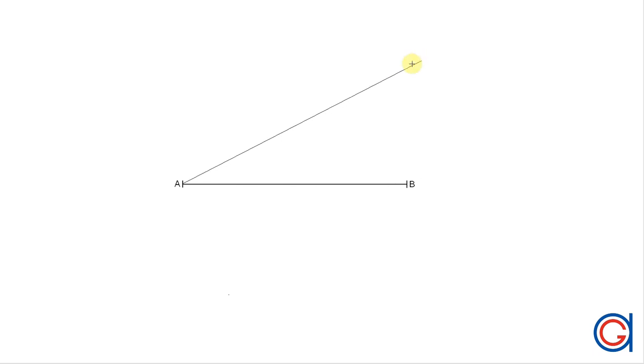First we draw a ray that has any angle and starts at point A. After that we will choose any given measurement, for example one centimeter, and mark it on the ray six times using a compass set to one centimeter, starting at point A.